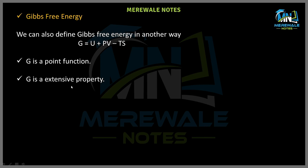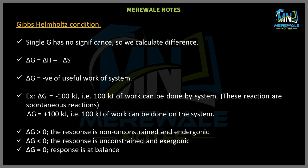G is an extensive property, meaning it depends upon the mass of the system. Just as we always calculate the change in entropy (ΔS) rather than the absolute entropy, we take the significance of the difference between the initial and final state for Gibbs free energy — that is, ΔG.